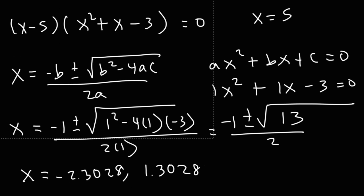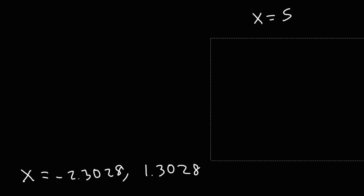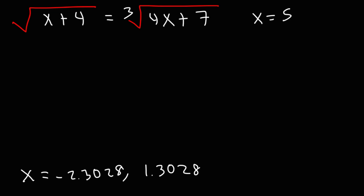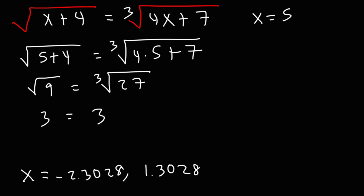Now we need to make sure all of the answers we have actually work, because sometimes all answers may be correct, some may be correct, or none may be correct. Let's check our solutions. First, testing x equals 5 in the original equation: the square root of 5 plus 4 equals the square root of 9, which is 3. The cube root of 4 times 5 plus 7 is the cube root of 27, which is also 3. So x equals 5 works.